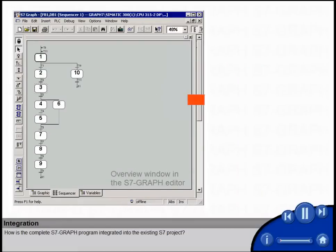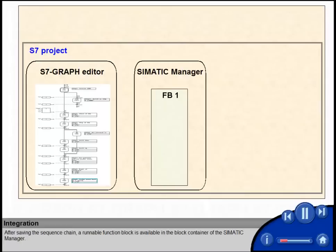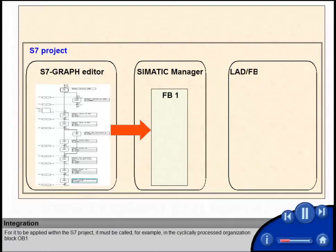How is the complete S7-GRAPH program integrated into the existing S7 project? After saving the sequence chain, a runnable function block is available in the block container of the Siemens Manager. For it to be applied within the S7 project, it must be called, for example, in the cyclically processed organization block OB1.